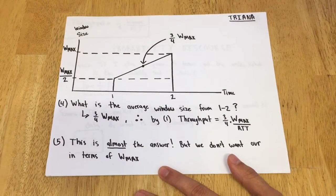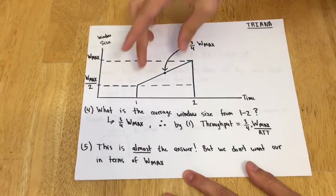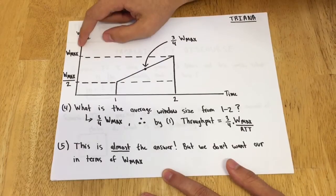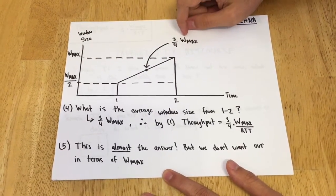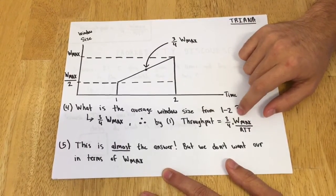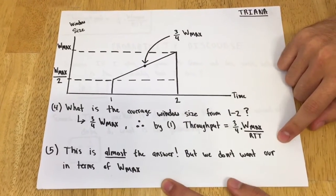Going back to the original equation, window size over RTT, we're going to calculate the average window size over this region. If this is W_max over 2 and this is W_max, clearly the midpoint is 3/4 W_max. So the average window size is 3/4 W_max, and substituting into the original equation, throughput equals 3/4 W_max over RTT.